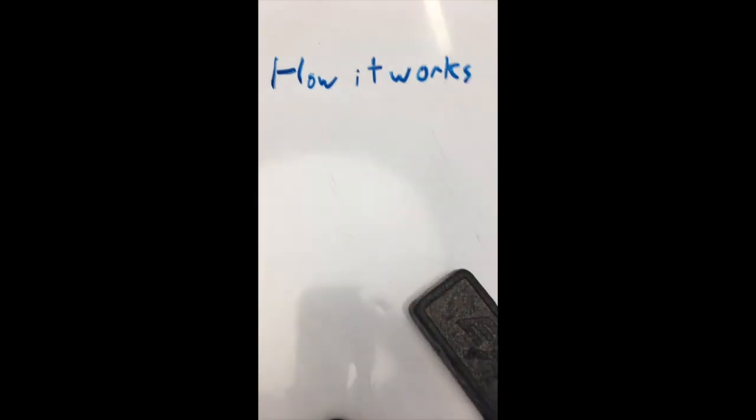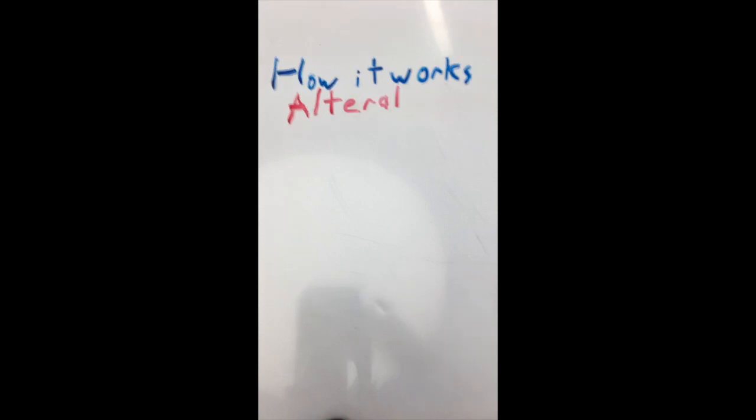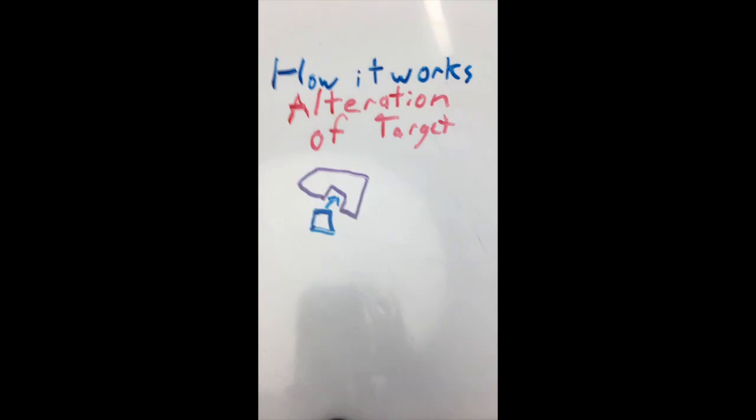As many ways as there are for resistance to spread, there are just as many ways for it to protect the cell against antibiotics. Most antibiotics target proteins, so alteration of target, in which bacteria produce differently shaped proteins, is a common strategy.